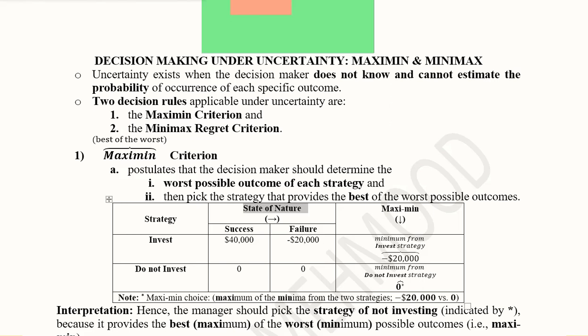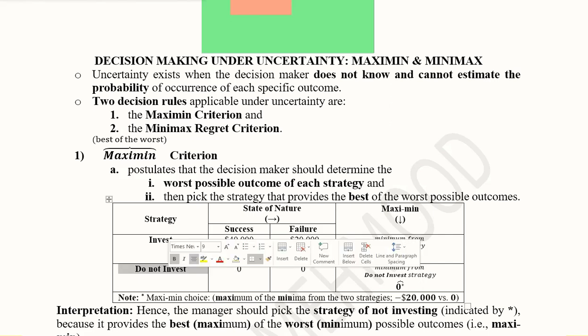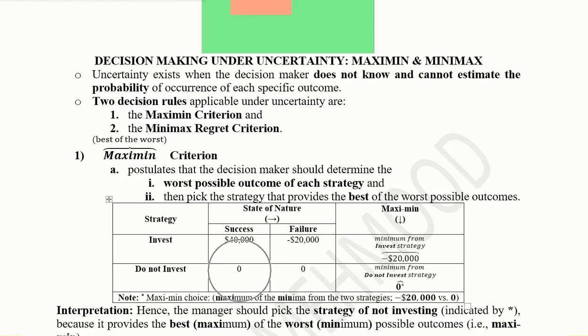This matrix helps us choose between the two strategies. The first strategy is investment: if success occurs, there is a profit of $40,000; if the situation is unfavorable, there is a loss of $20,000. The worst outcome of the invest strategy is therefore minus $20,000. The second strategy is do not invest: regardless of whether conditions are favorable or unfavorable, there is no return.